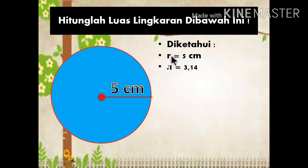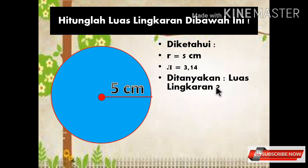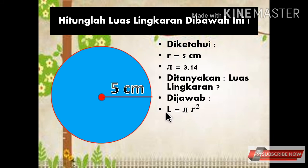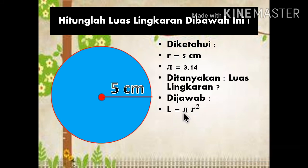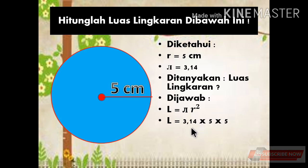Diketahui: sebuah lingkaran memiliki jari-jari R = 5 cm. Karena jari-jarinya bukan kelipatan 7, maka π yang kita gunakan adalah 3,14. Yang ditanyakan adalah berapakah luas lingkaran tersebut? Rumus luas lingkaran = π × R². Kita masukkan: π = 3,14, R = 5, jadi luas lingkaran = 3,14 × 5 × 5.